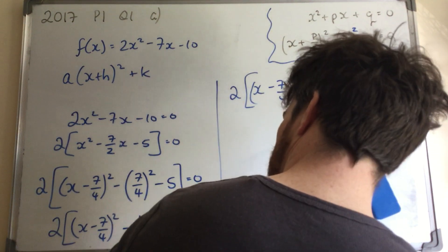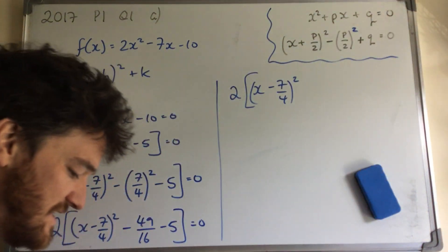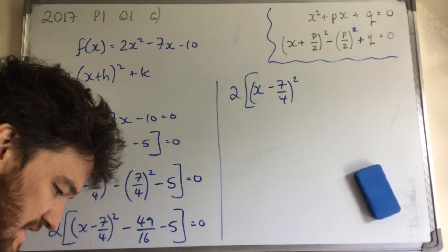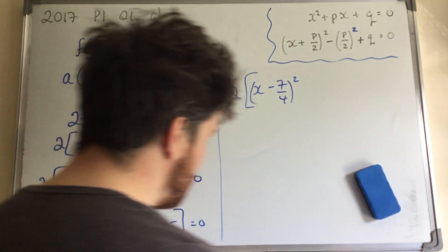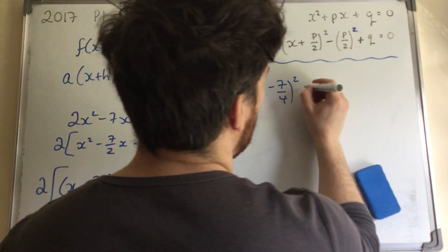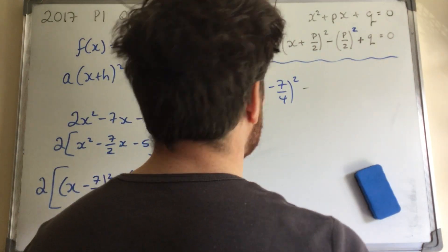Okay, cool. So minus 49. Oh, no, I didn't do it. I didn't do it right in the calculator. So minus, there you go. 129. Minus 129 because I can't add. So minus 129 over 16.